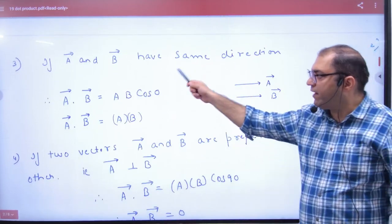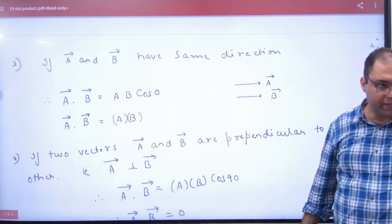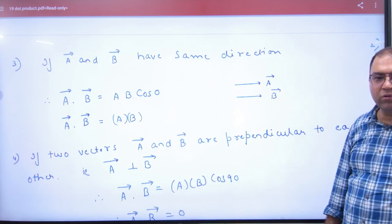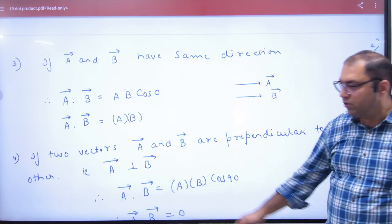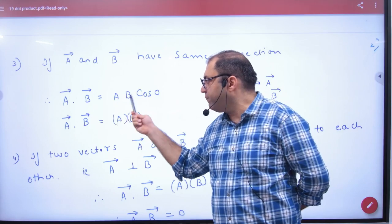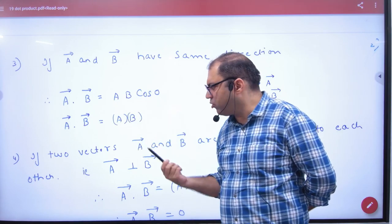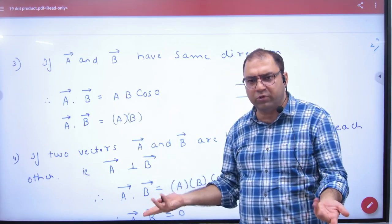Note this: If A vector and B vector have the same direction, what will be the angle? Zero. Then open it. A vector dot B vector equals A, B, cos zero. Remember this, because we will use zero in the calculation.